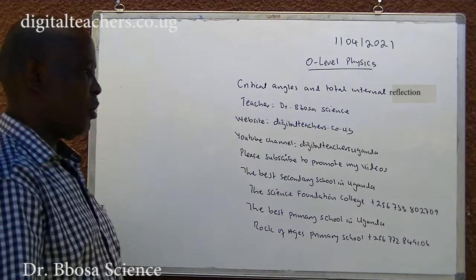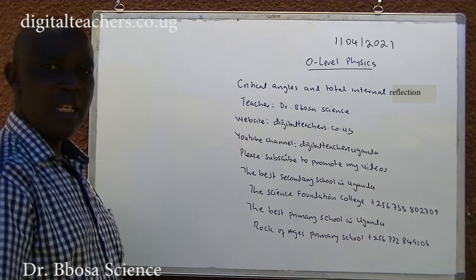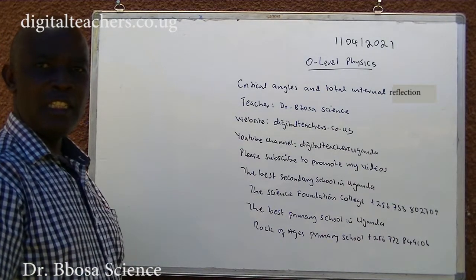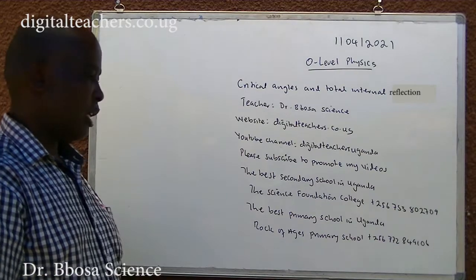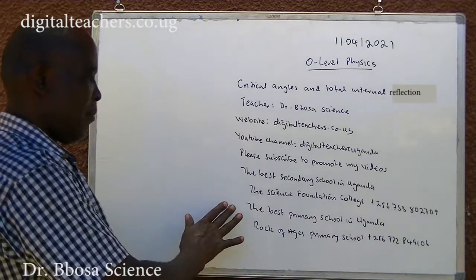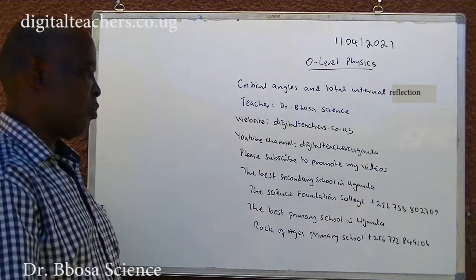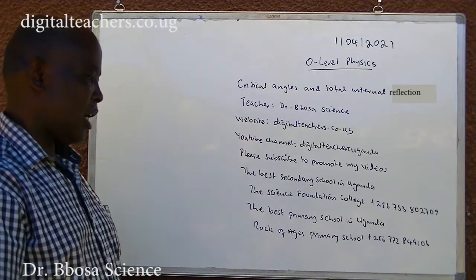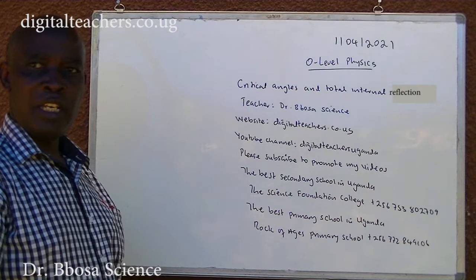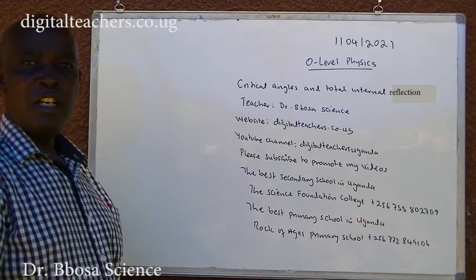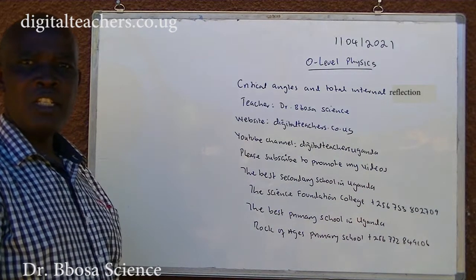The best secondary school in Uganda is the Science Foundation College. The best primary school in Uganda is Locke of Ages primary school.